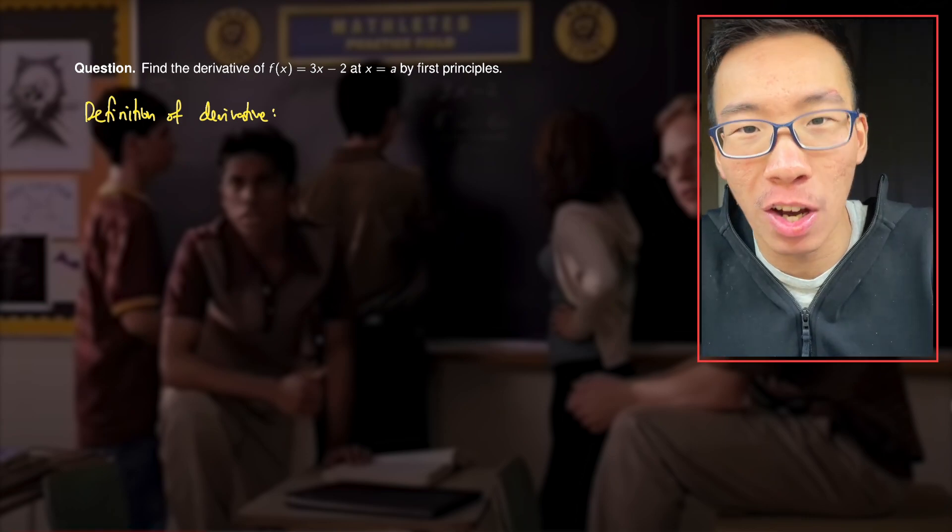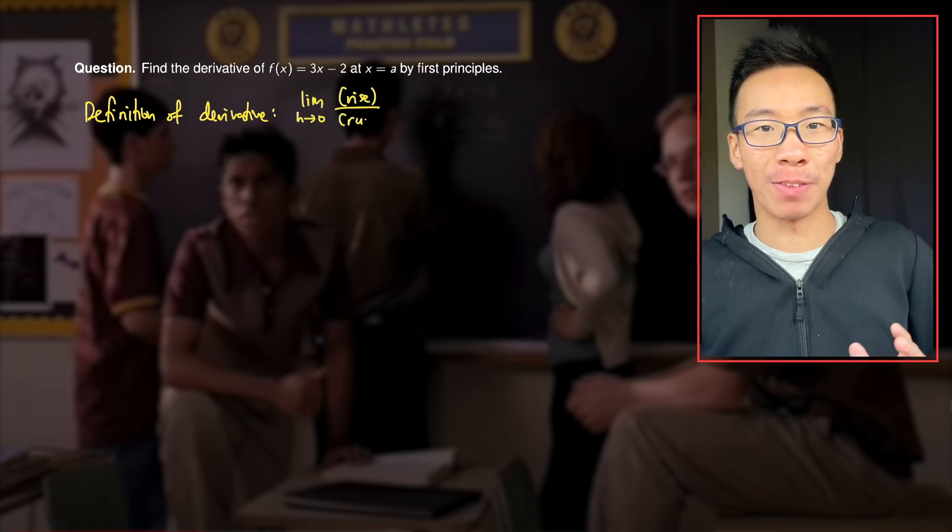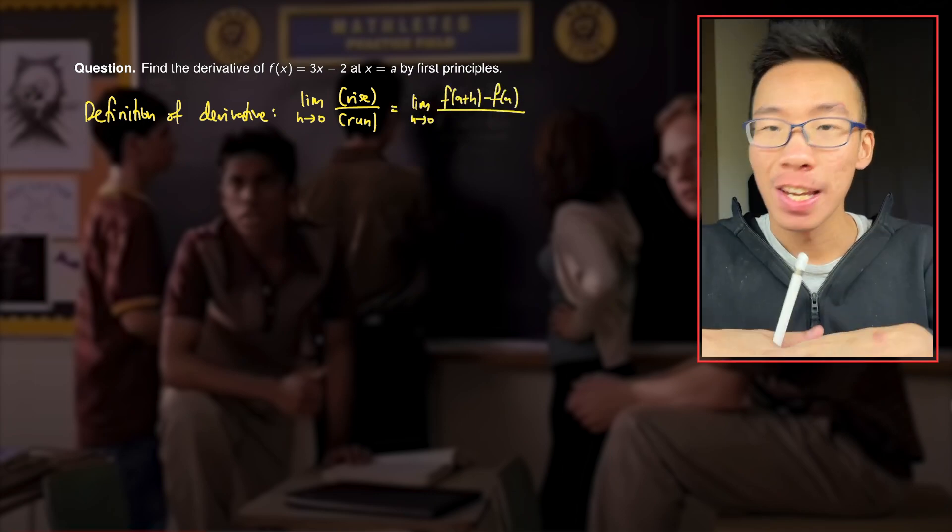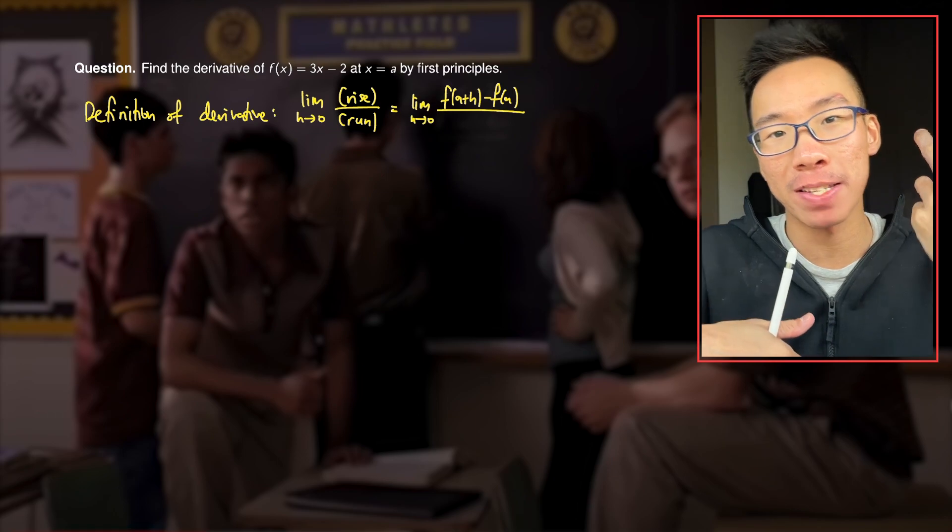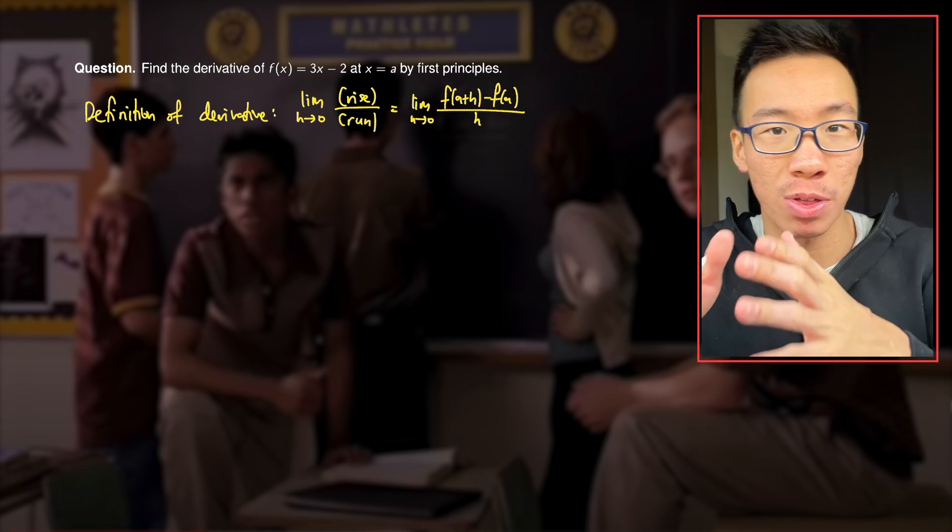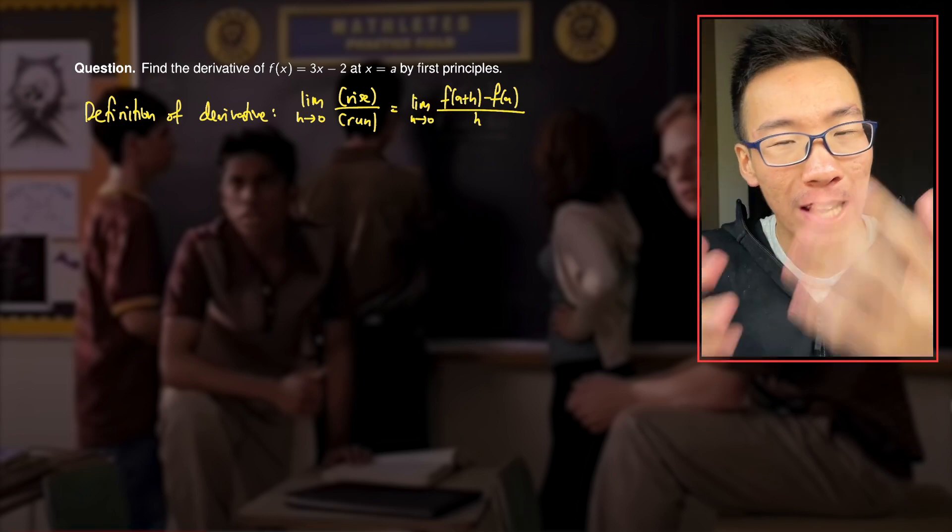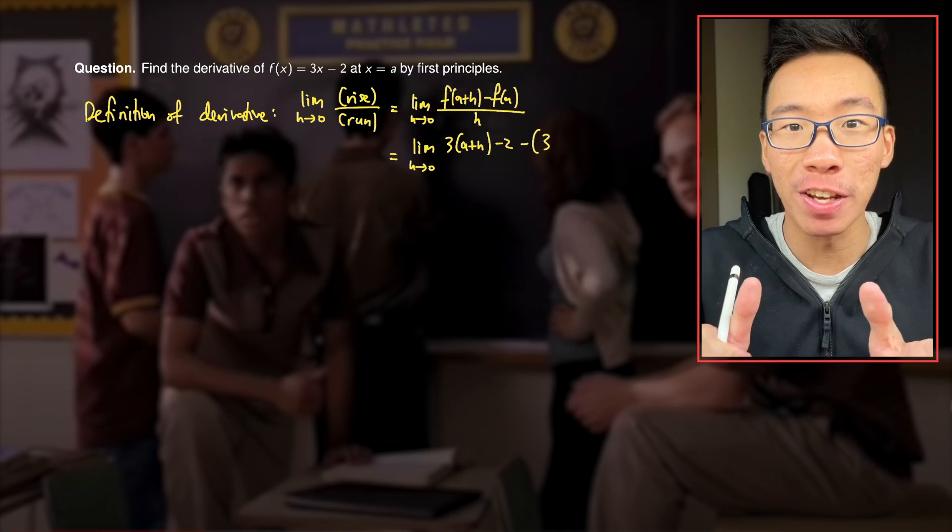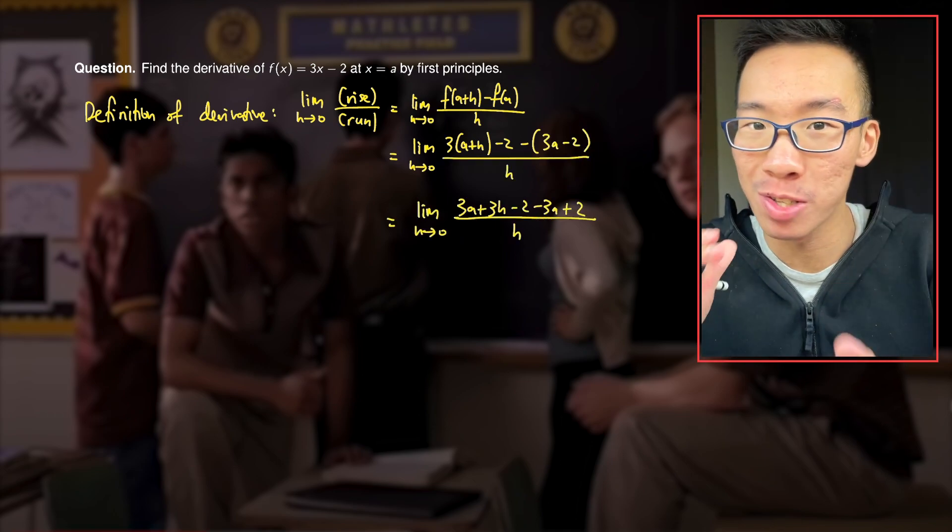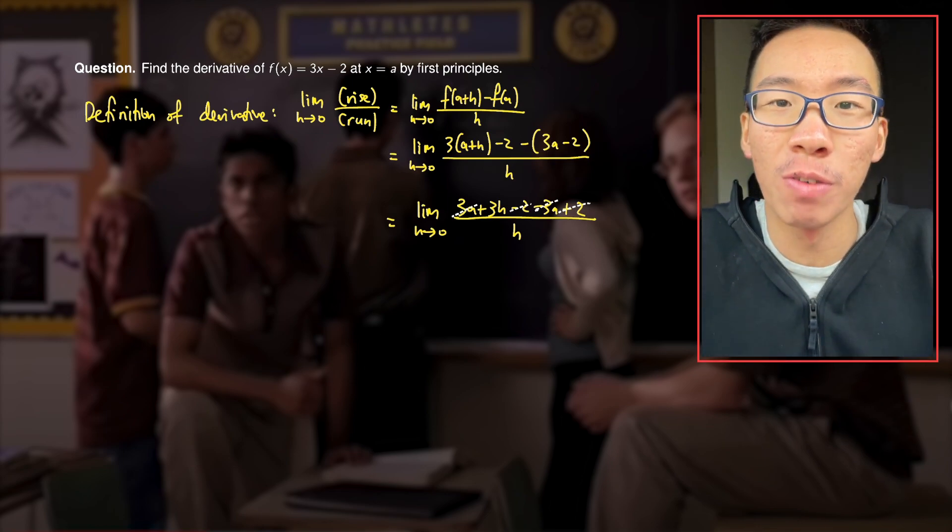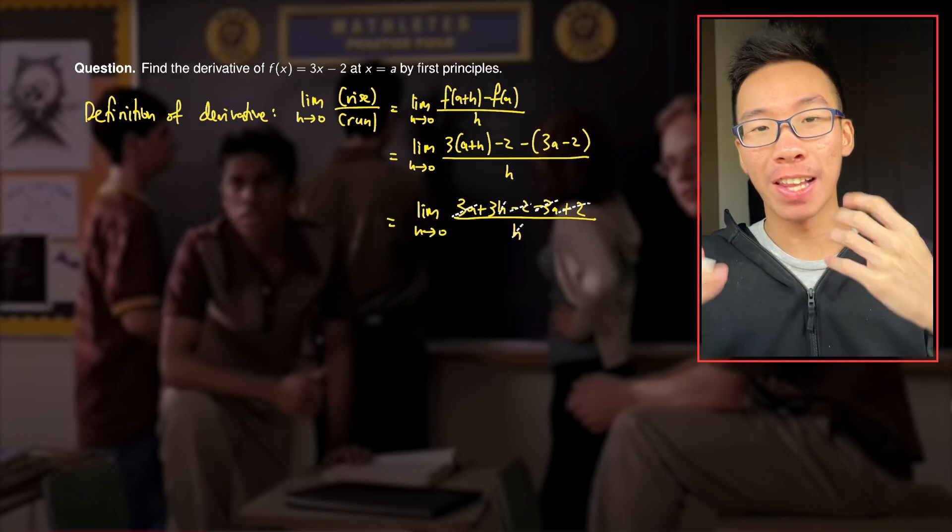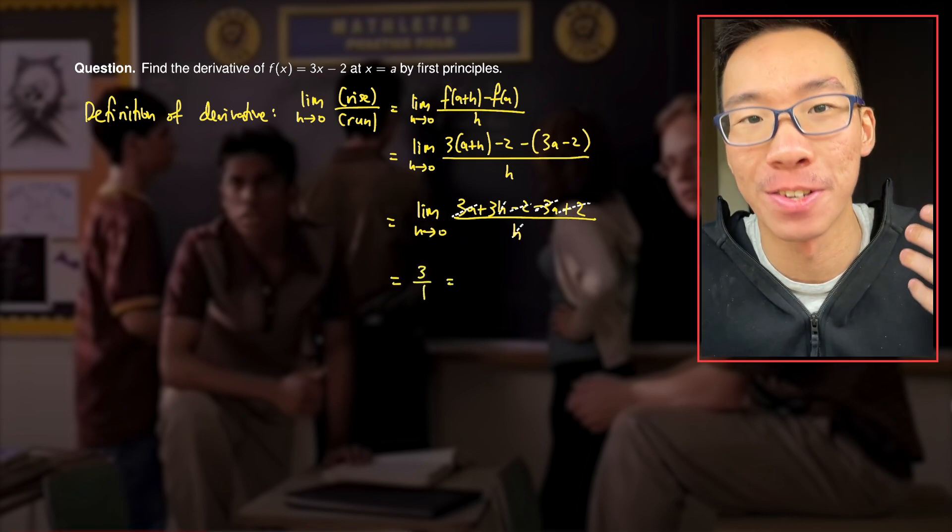which is essentially a limit of rise over run. The rise is going to be f of a plus h minus f of a, and the run is the difference between a plus h and a, which is simply h. So since f of x equals 3x minus 2, we can plug in f of a plus h and f of a respectively. We can expand the numerator and cancel out some terms. And now we're left with 3h over h. But from here, the h's can cancel as well. And we're left with 3 over 1, which is precisely the derivative.